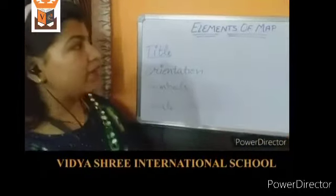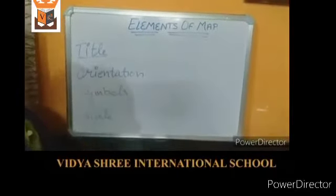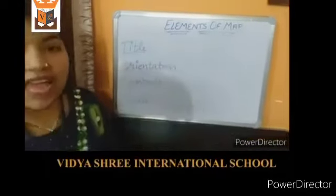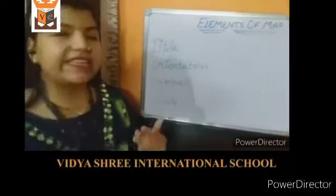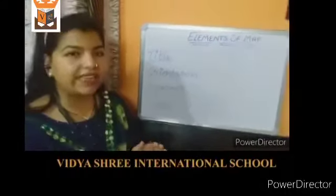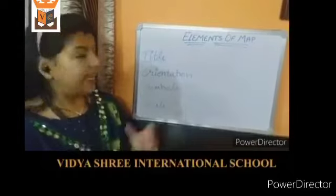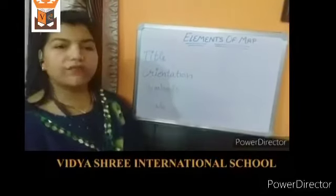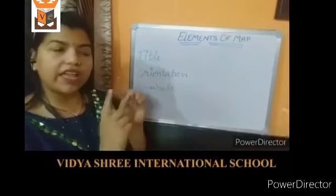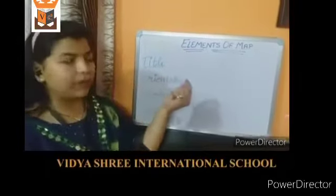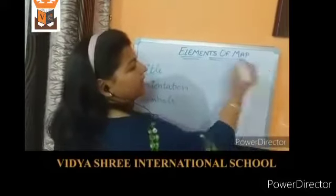Elements of map. The elements of map are the things that make it easy to read a map. The first element is title — as the name suggests, it tells us about the type of map or the area covered by the map. Second is orientation, which tells us about the four major cardinal directions and where they are on the map. North is always at the top of the map.